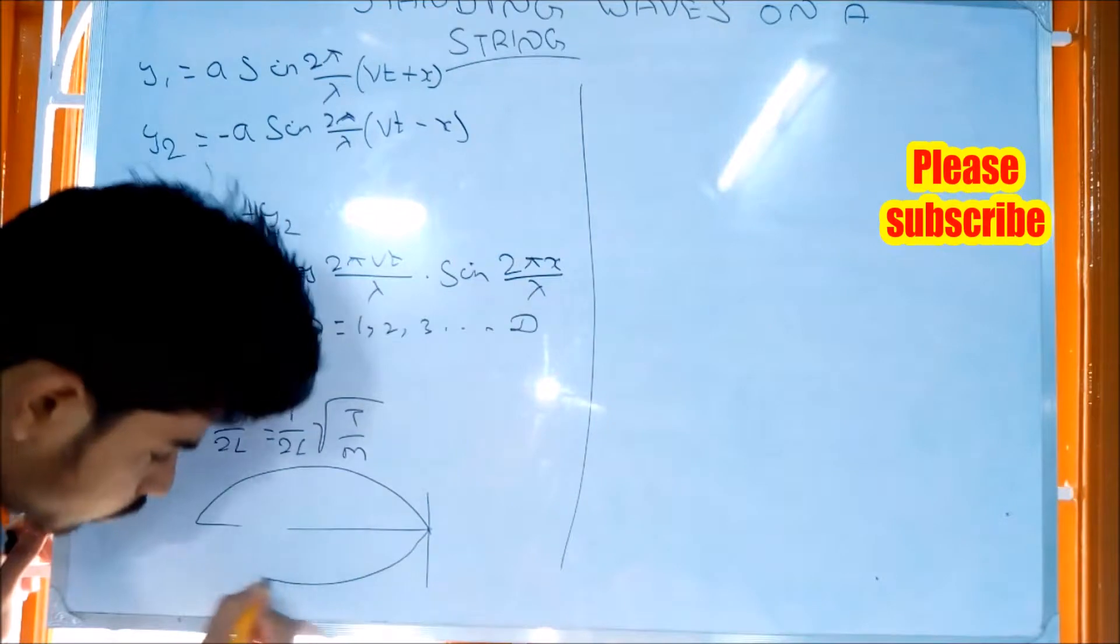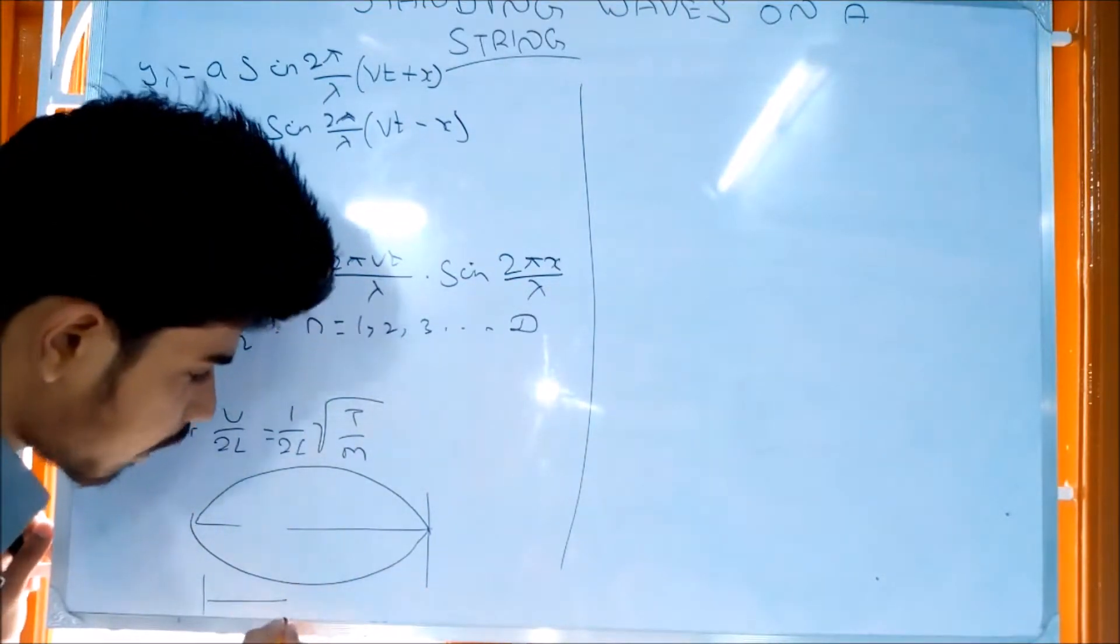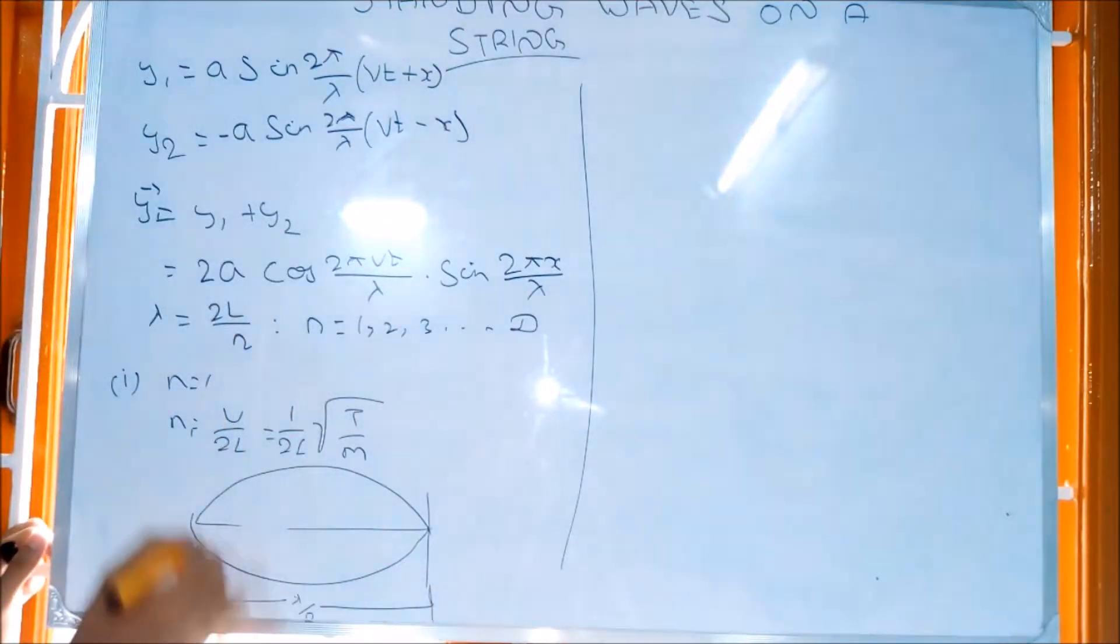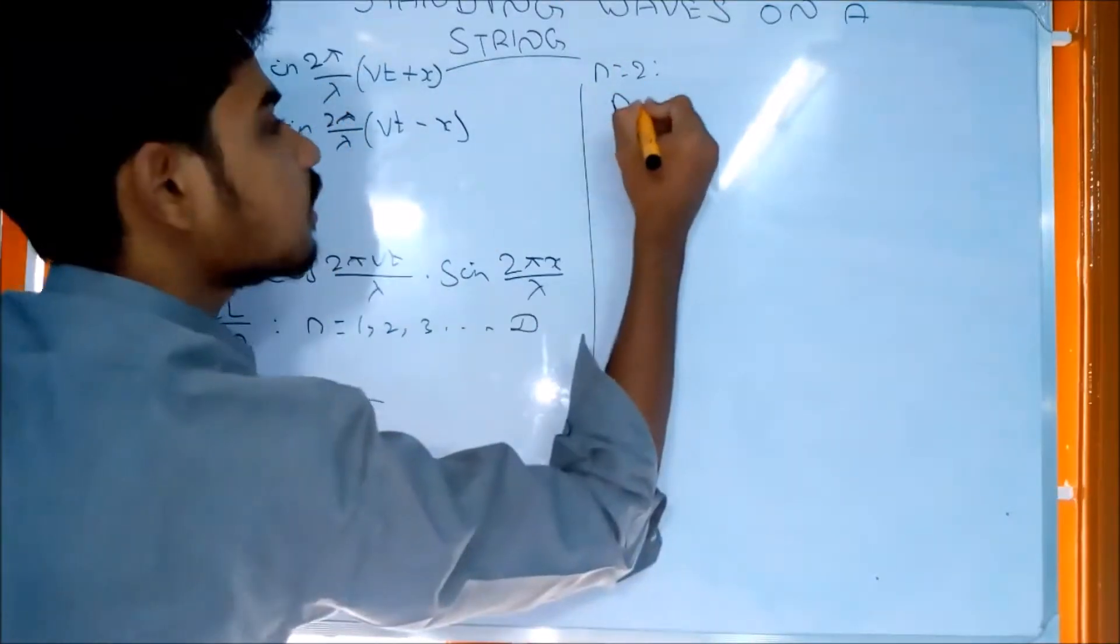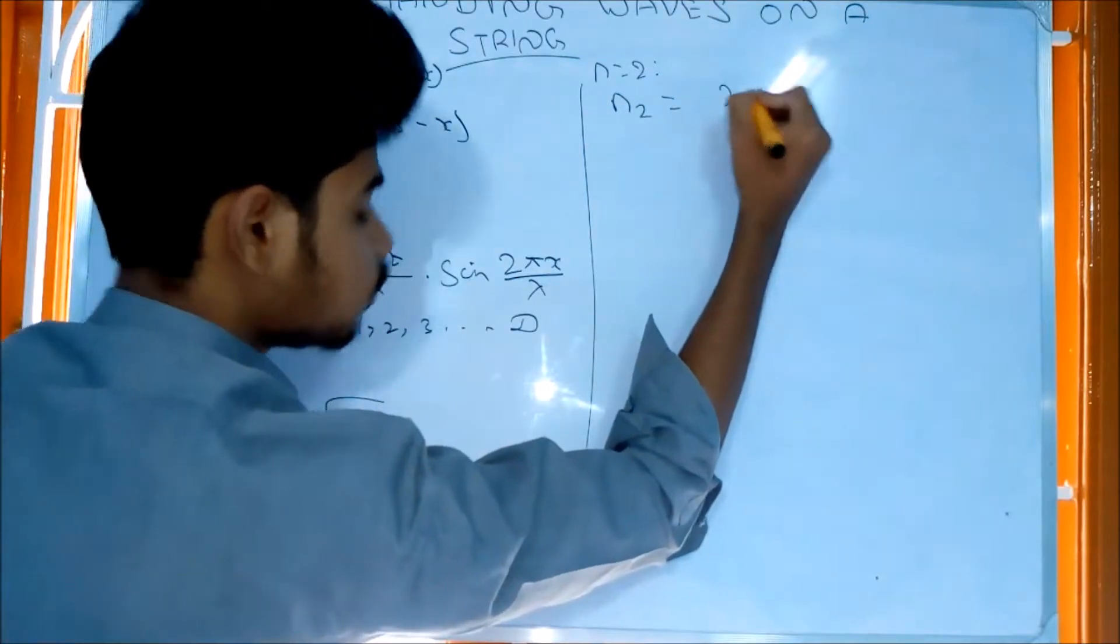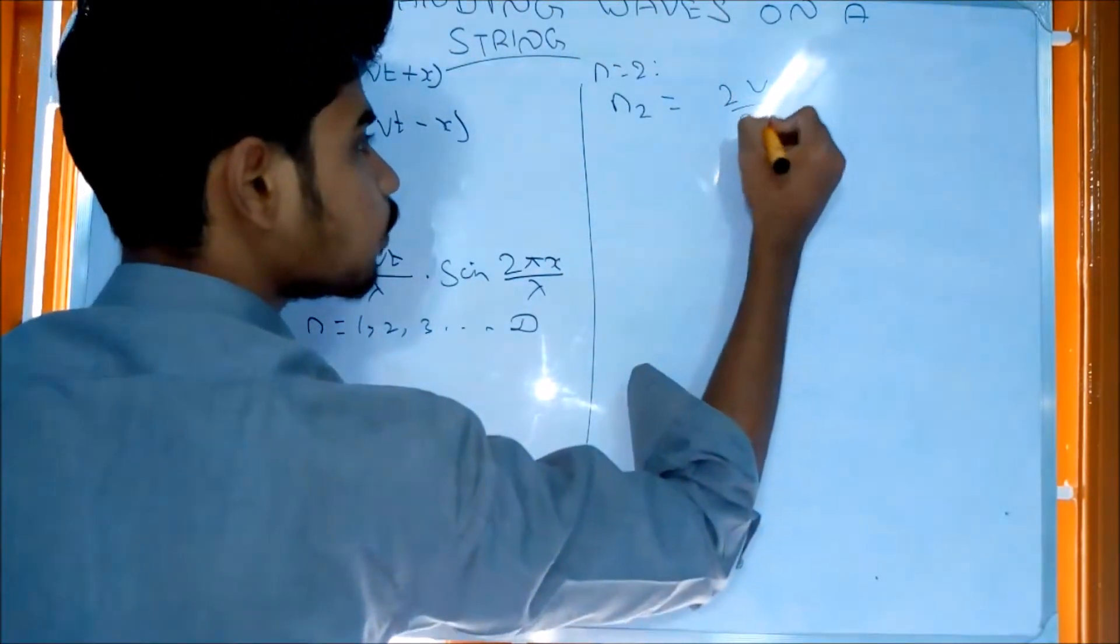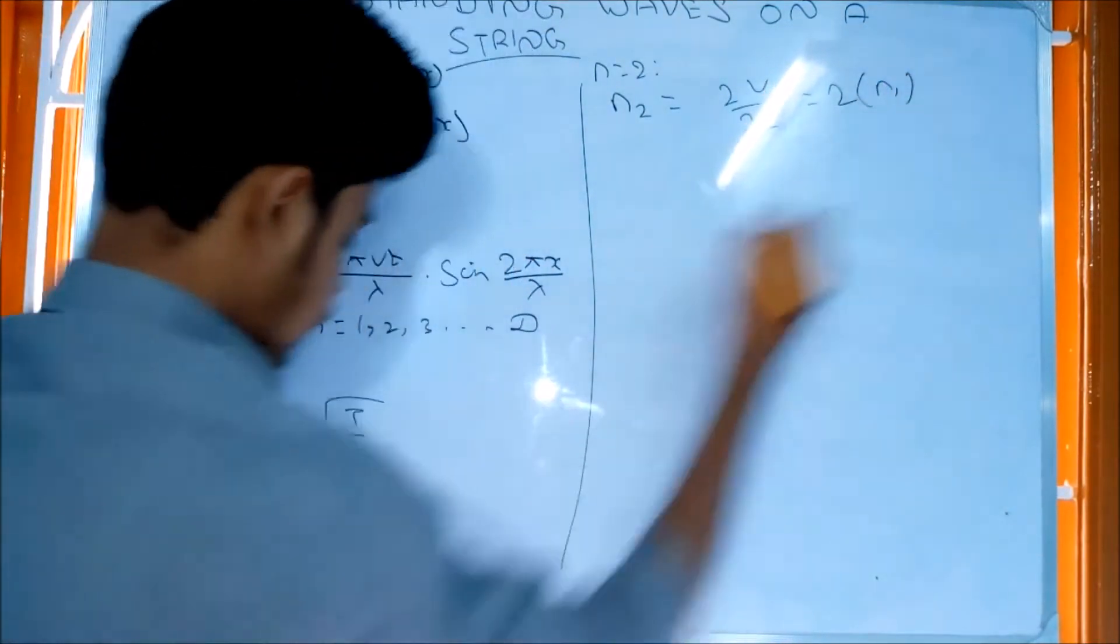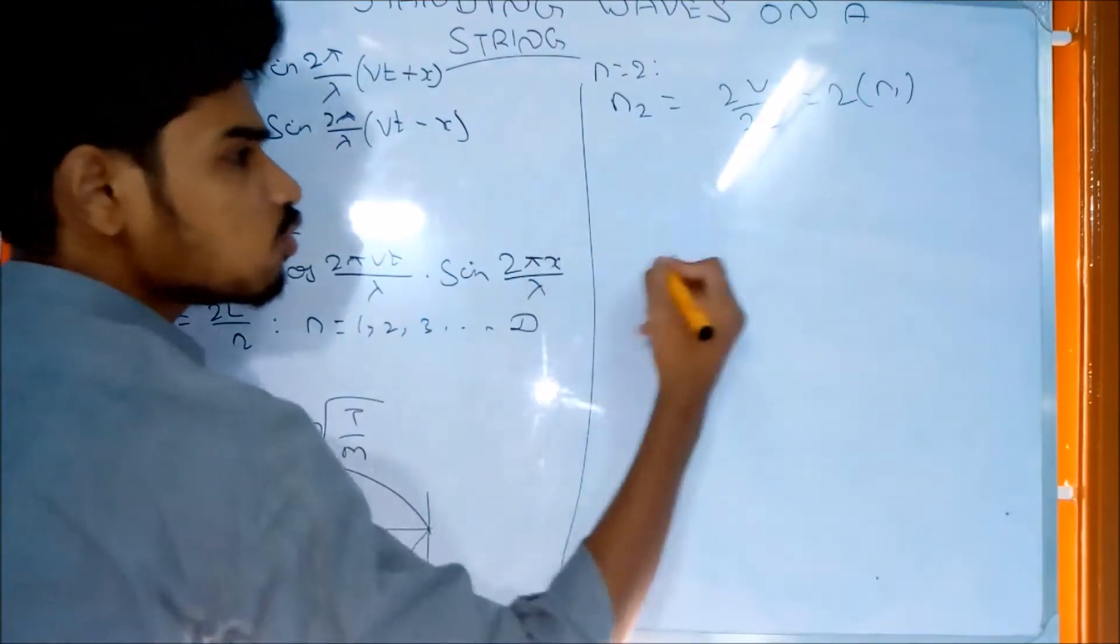For the second mode, when n equals 2, the frequency n2 equals 2v/2L. The wavelength becomes λ/2.